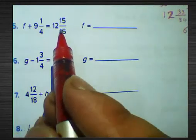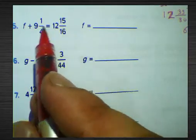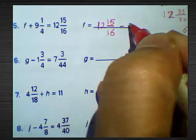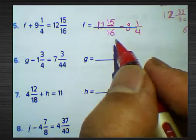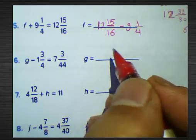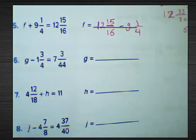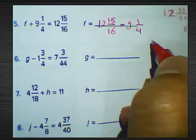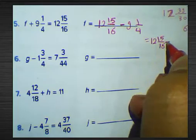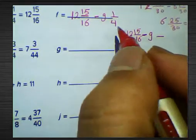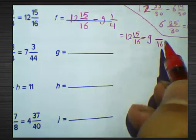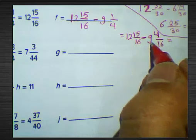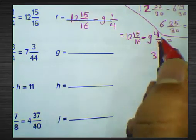Question number five: 5 plus 9 and 1 over 4 equals 12 and 15 over 16. Find the unknown by subtracting: 12 and 15 over 16 subtract by 9 and 1 over 4. The LCM of 16 and 4 is 16. Convert 1 over 4: 4 times 4 equals 16, 1 times 4 equals 4. Now find the difference: 12 minus 9 equals 3, and 15 minus 4 equals 11, over 16.